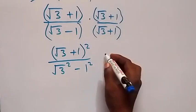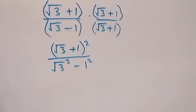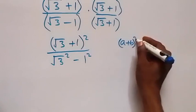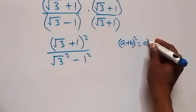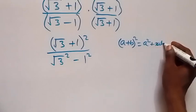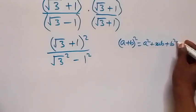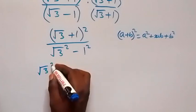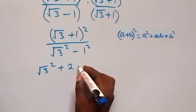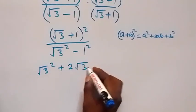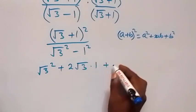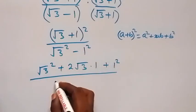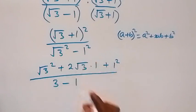When we expand the numerator using the form (a + b)² = a² + 2ab + b², we get root 3 squared plus 2 times root 3 times 1 plus 1 squared, over root 3 squared minus 1 squared. The squares cancel the square roots, giving 3 plus 2 root 3 plus 1, over 3 minus 1.